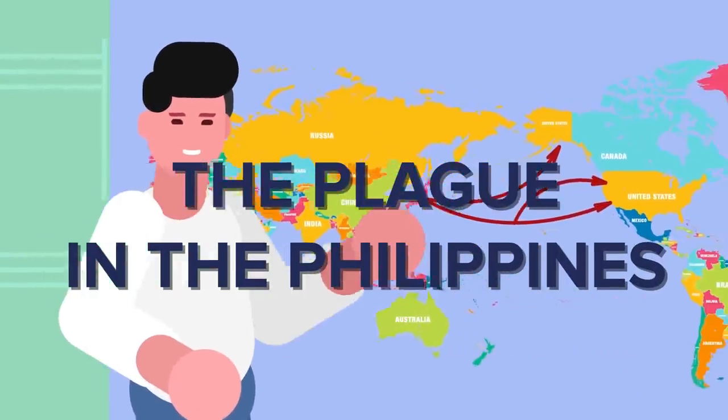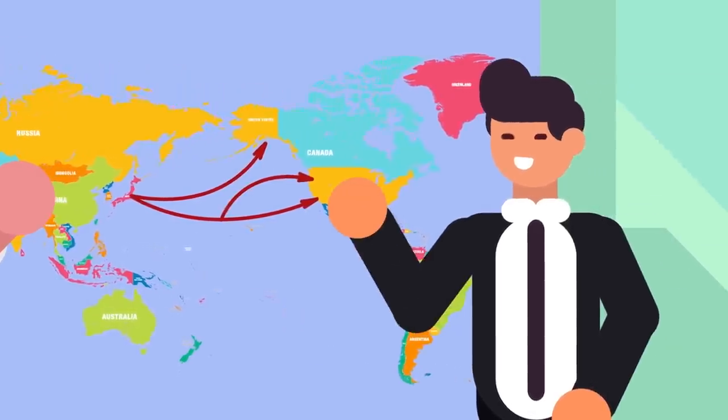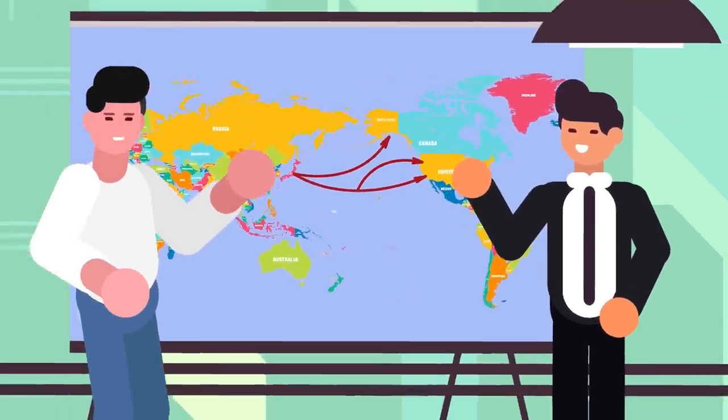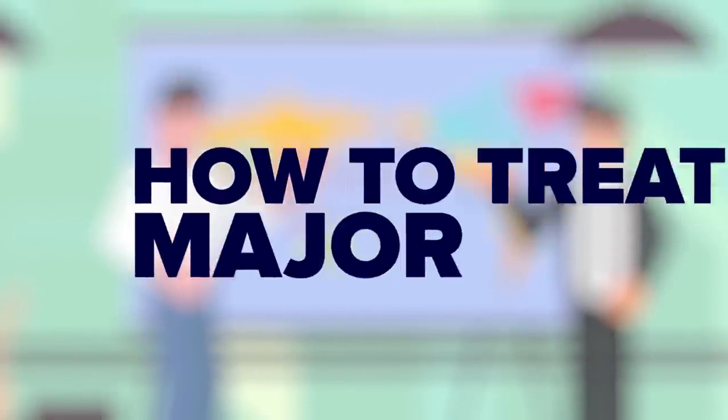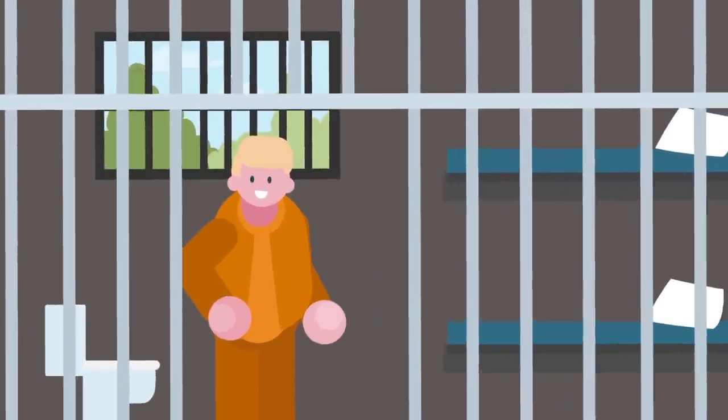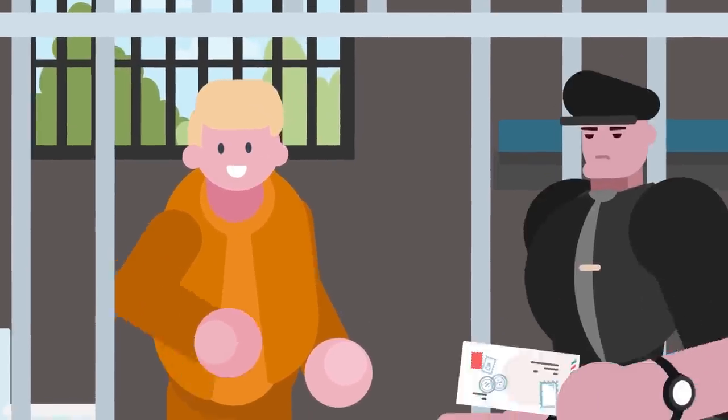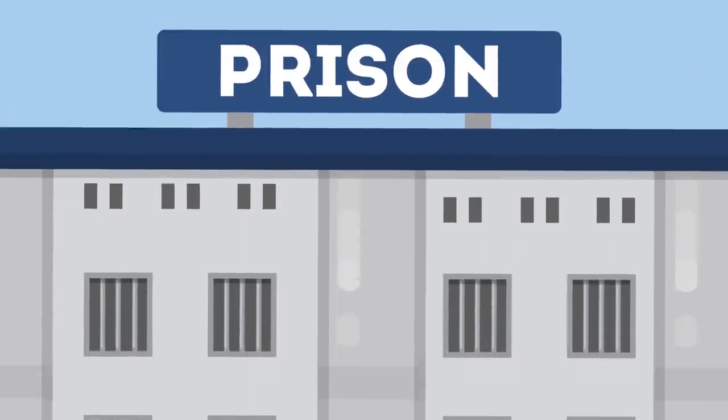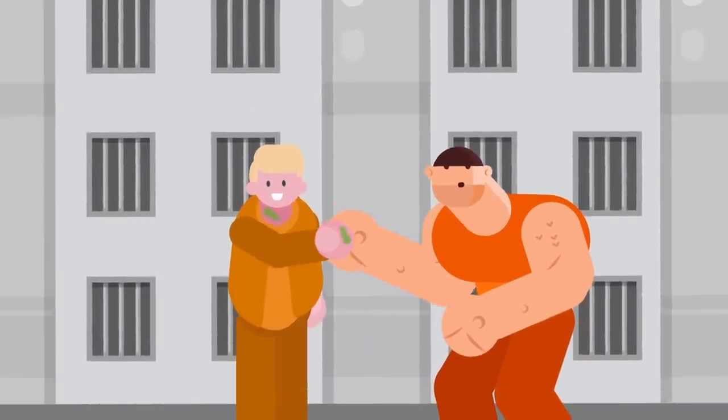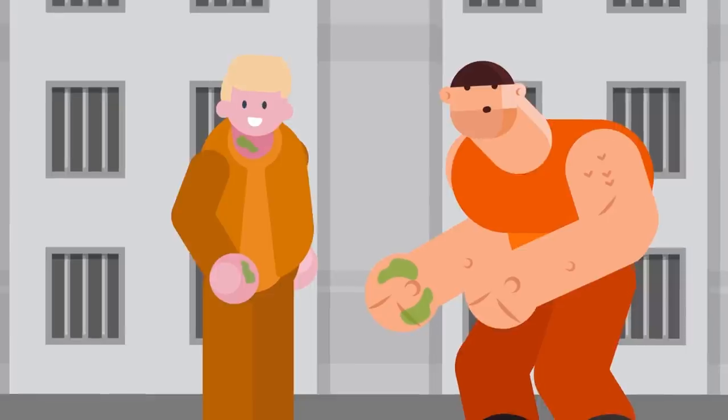The plague in the Philippines. During the Second World War, the Japanese were trying to figure out how to drop diseases on the USA. But before this time, the US was trying to figure out how to treat major diseases. It's said that while in the Philippines, the US army along with scientists purposely gave five prisoners the bubonic plague and caused something called beriberi in another 29 prisoners. Four of these people died.